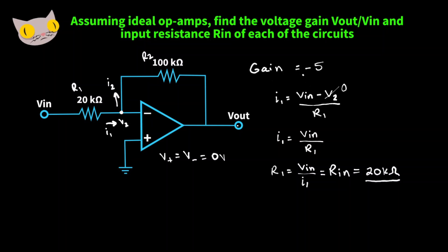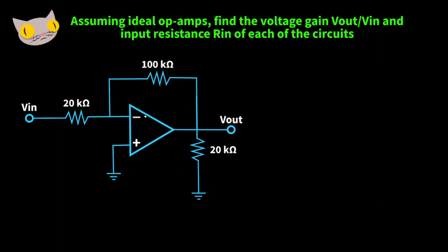So we found our gain and input resistance for the first circuit. Here is our next circuit. Again, due to the virtual ground, since our positive terminal V1 is zero, the voltage at the negative terminal V2 is also zero.